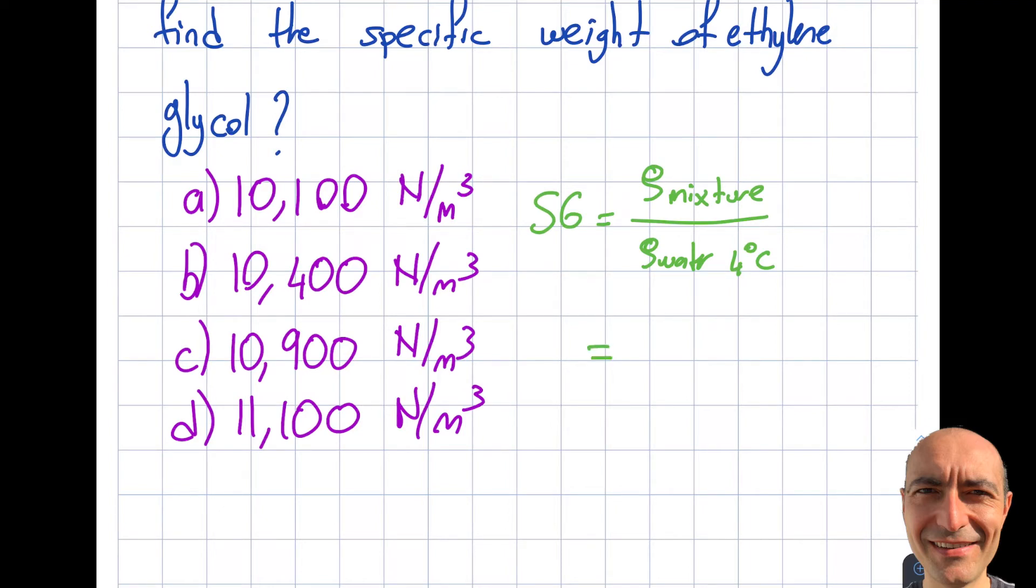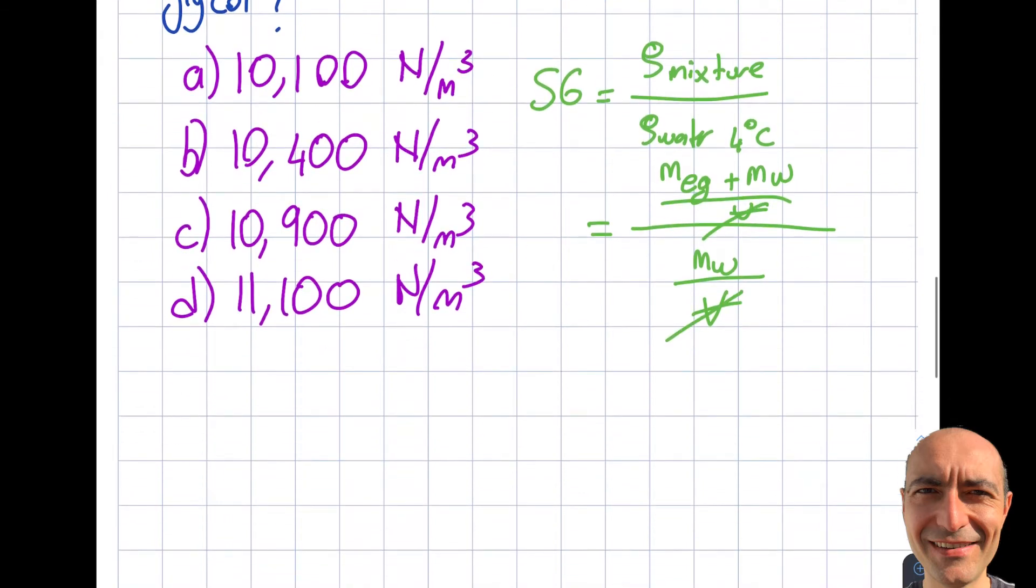Let's look at the density of mixture. The density of mixture will be the masses added. I'm going to add m ethylene glycol plus m water divided by the volume that it occupies, divided by the density of water at 4 degrees C, which is defined by m water divided by the volume. You can see from here that these volumes cancel each other and I get SG equals m ethylene glycol plus m water divided by m water.